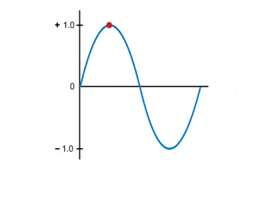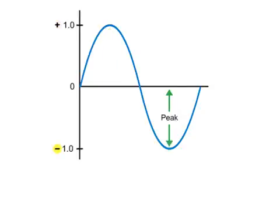The highest point or the lowest point of an AC waveform are referred to as peaks. Peak amplitudes or values can be measured in the positive direction starting from the baseline, or in the negative direction. The peak-to-peak value is measured from the negative aspect of the waveform to the positive aspect.